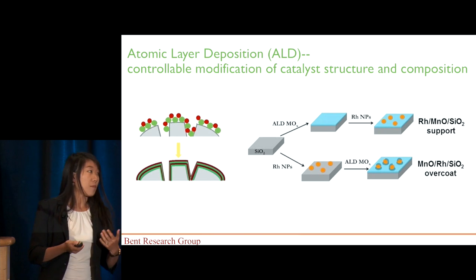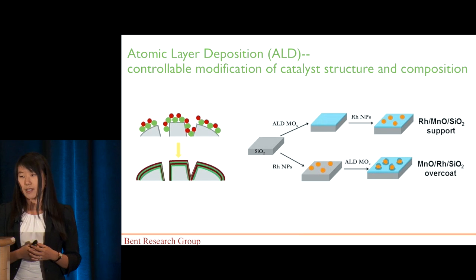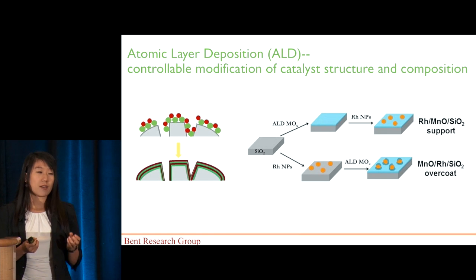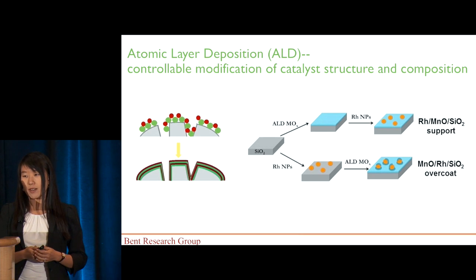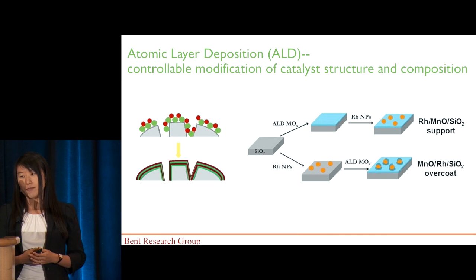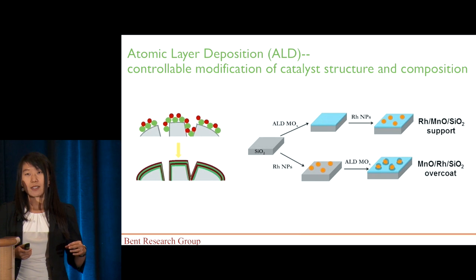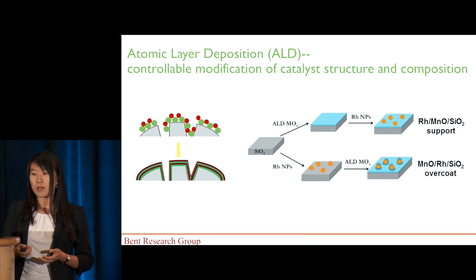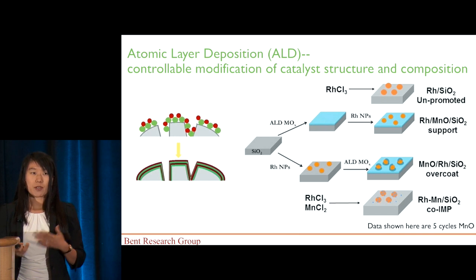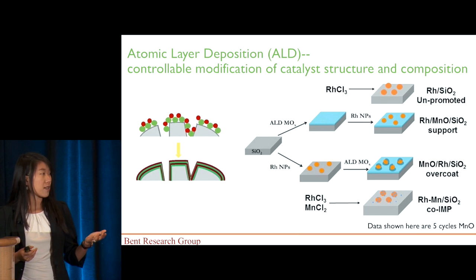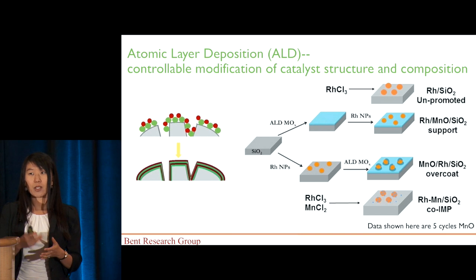We designed two models in order to study the effect of manganese oxide. In the first case, we deposit an ultra-thin layer of manganese oxide by ALD on the silicon oxide substrate, and then we deposit the rhodium nanoparticles. So in this case, the manganese oxide is a support modification layer. In the other case, we deposit the rhodium nanoparticles first, and then deposit the ALD manganese oxide as an overcoat layer. The rhodium nanoparticles are deposited by a wet chemistry technique called incipient wetness impregnation.